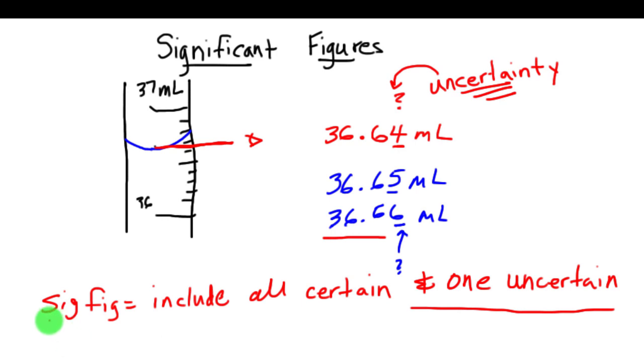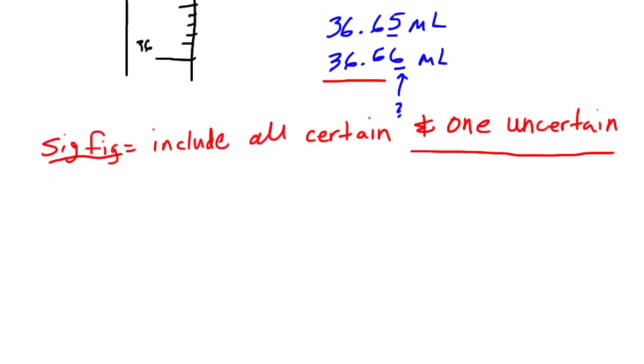So when a scientist writes a number such as 40.2 grams, well, this has three significant figures. So one, two, three significant figures. So you can read the number of significant figures based on the measurement.